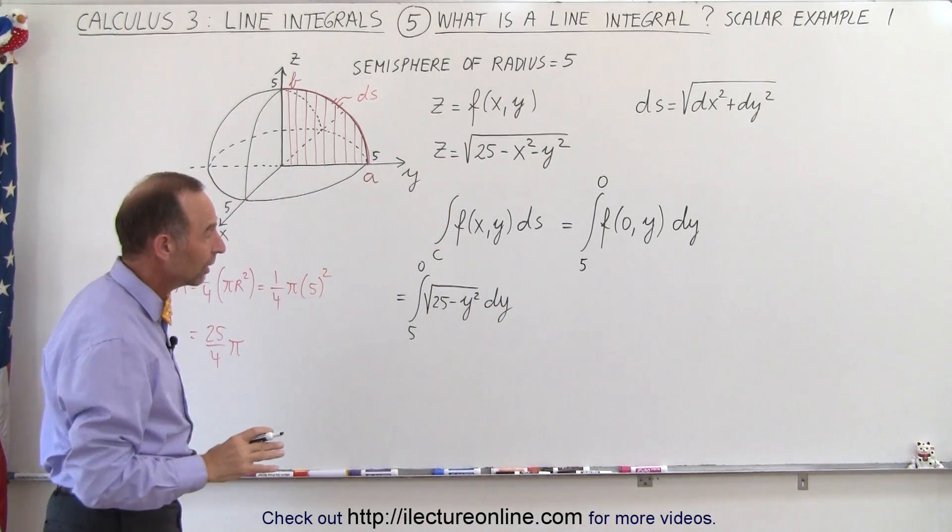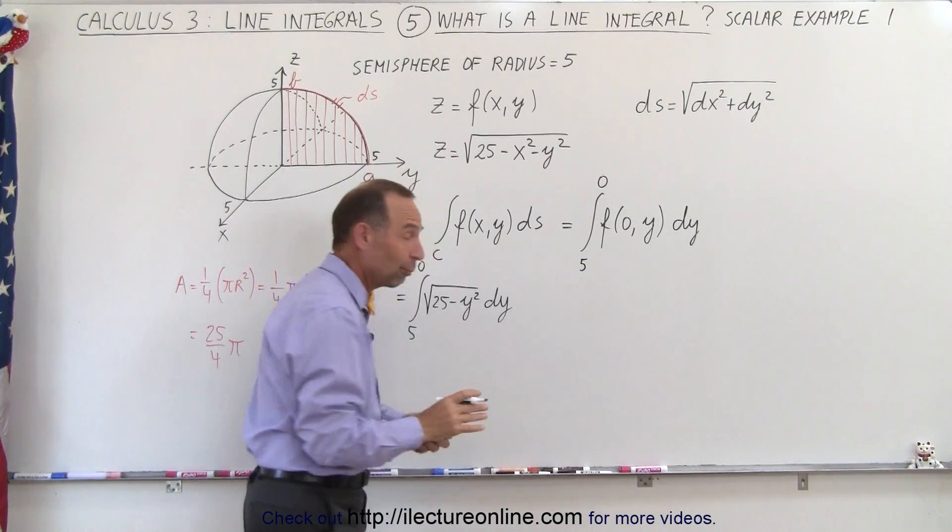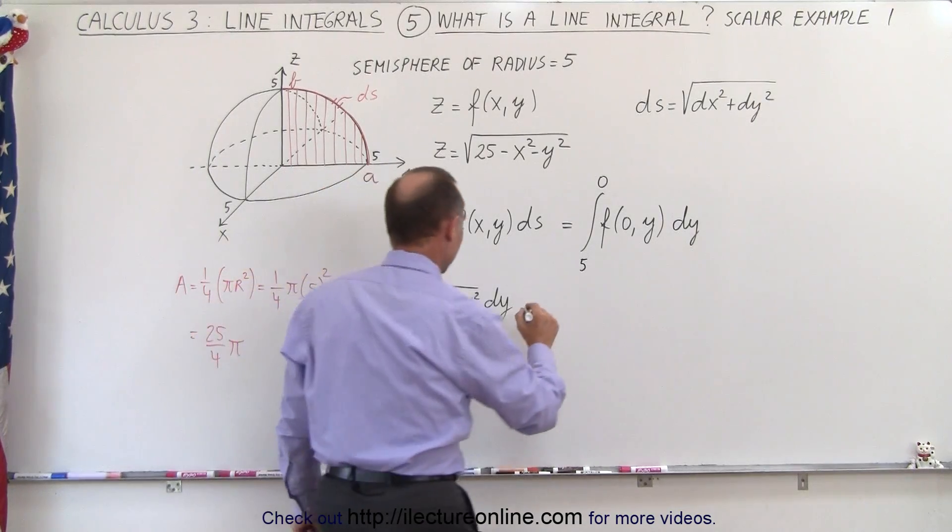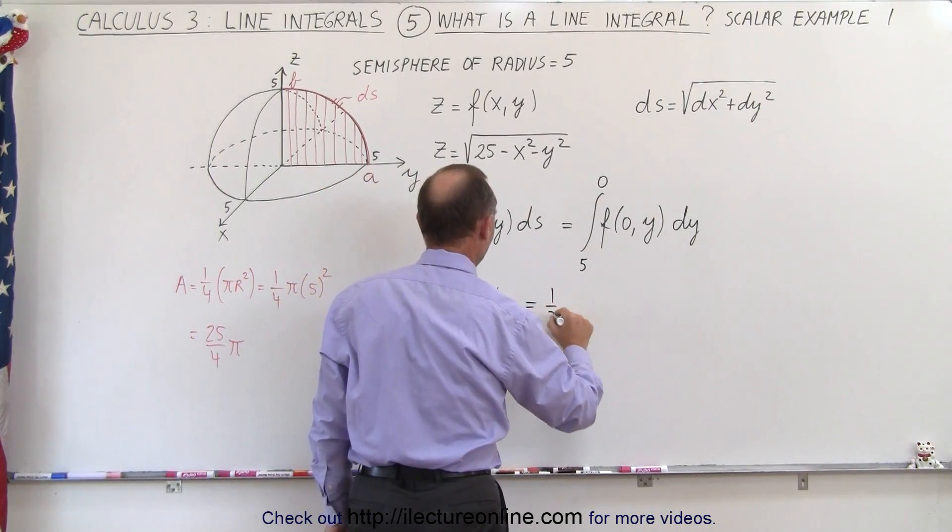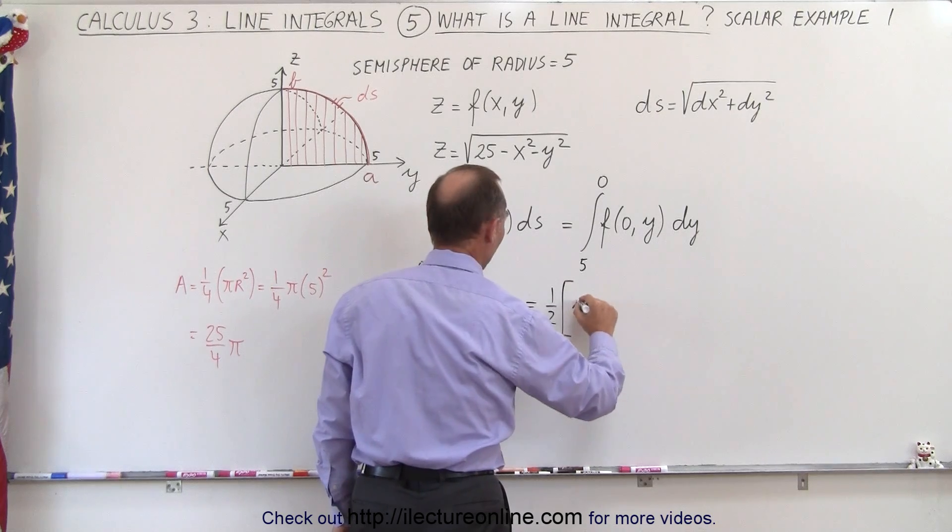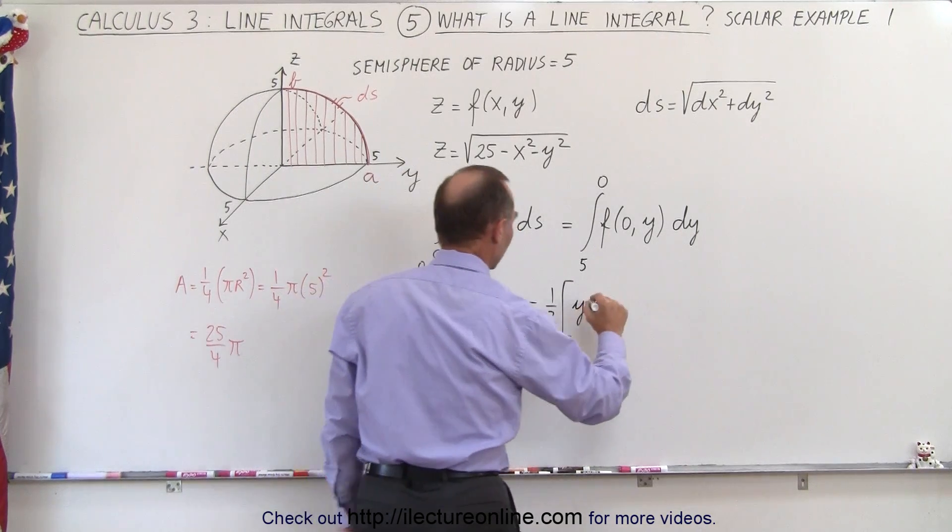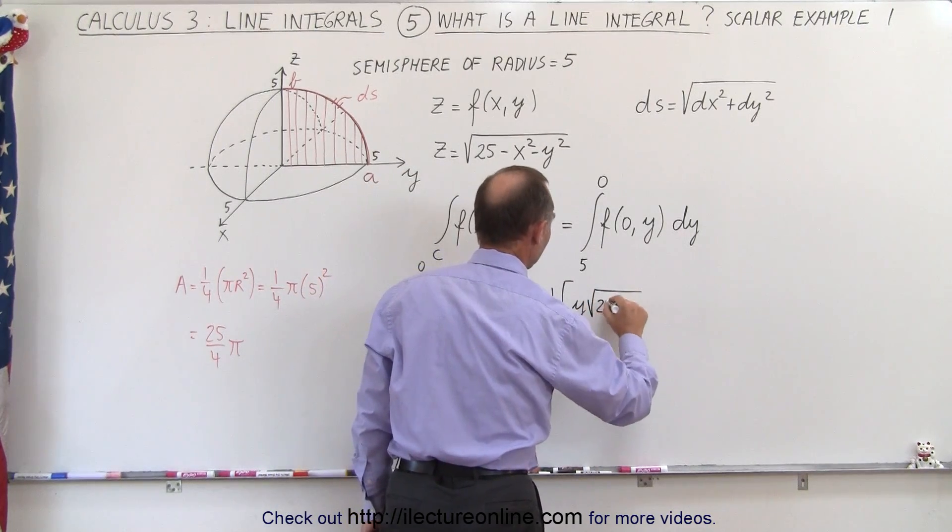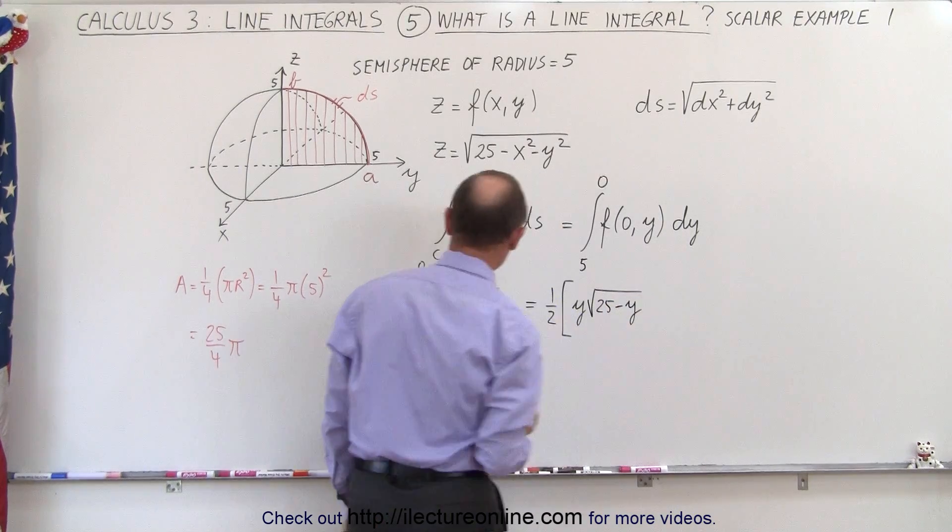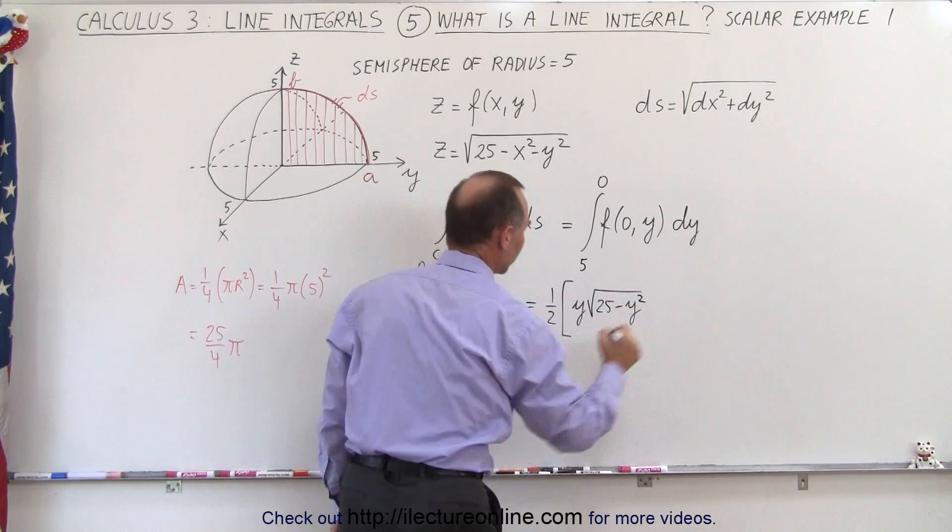So now we have to know what that integral is, and if you remember, or if you don't remember, just go to an integral table. This is equal to 1 half times the quantity of y times the square root of 25 minus y. And, of course, that would be y squared.